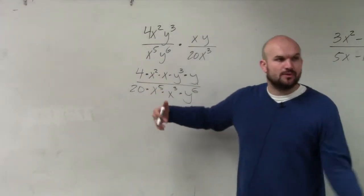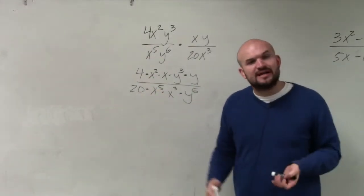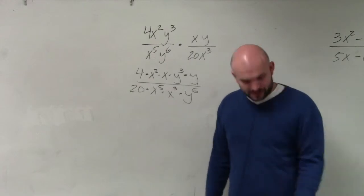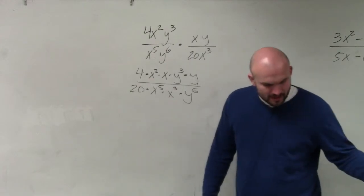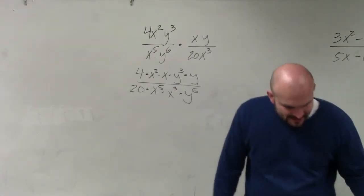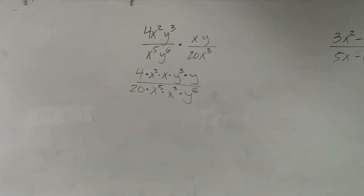Now let's look at the numbers. 20 doesn't divide into 4, but I can reduce the fraction 4 over 20 as 1 fifth.